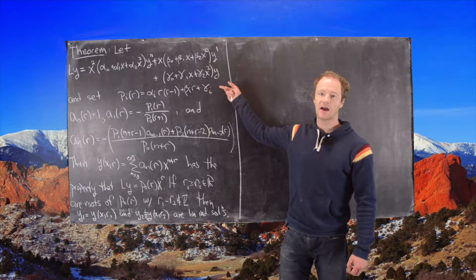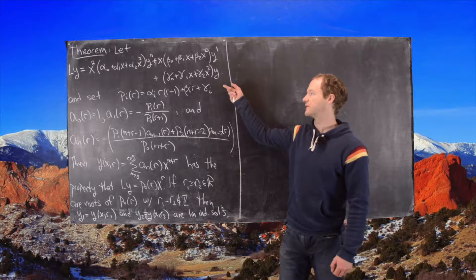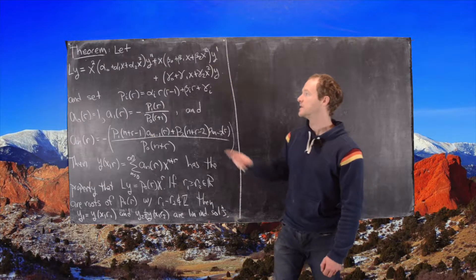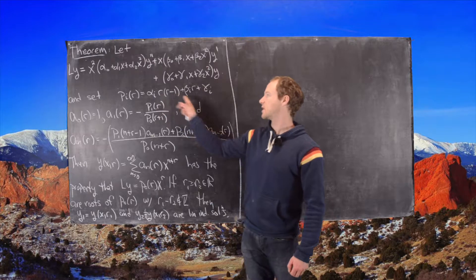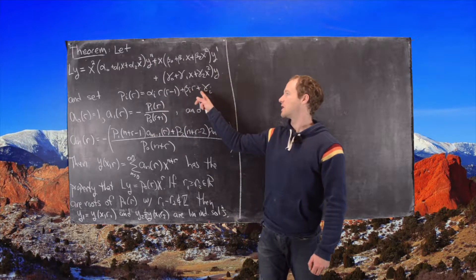And now we set p_i for i equals 0, 1, and 2 equal to the following polynomial in the variable r. So we have alpha_i times r times r minus 1, beta_i times r, and then gamma_i.